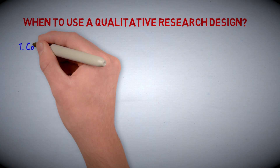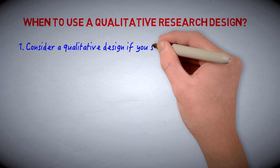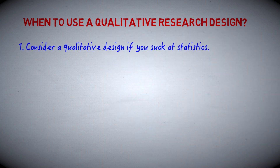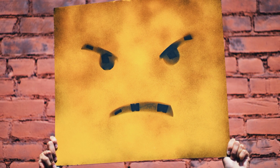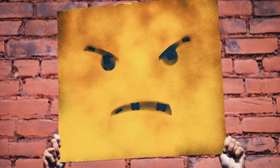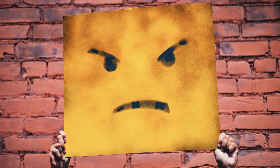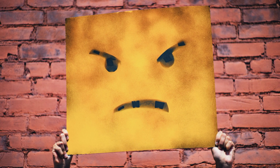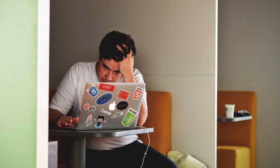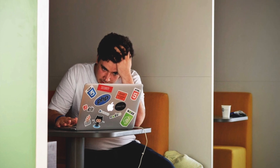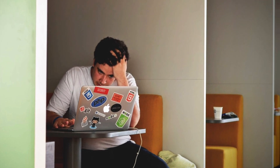Number one. You might want to seriously consider a qualitative research design if you just can't handle statistics. This should be a very obvious and self-explanatory consideration, and it's a point I made in my previous video as well — and I got a lot of criticism for it. Some complained: how can you advise this to students? How can you suggest that they should use qualitative research designs for evasive purposes, for avoiding statistics? I hope no student would take your advice to heart. That was an actual comment someone left on my previous video. I wish I could show it to you, but I deleted it.